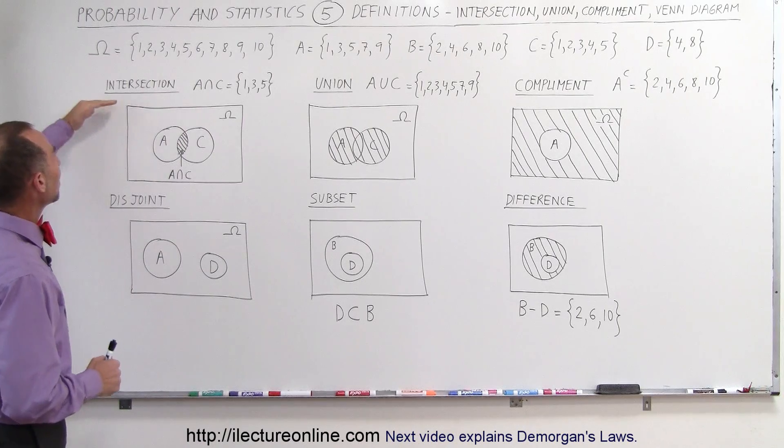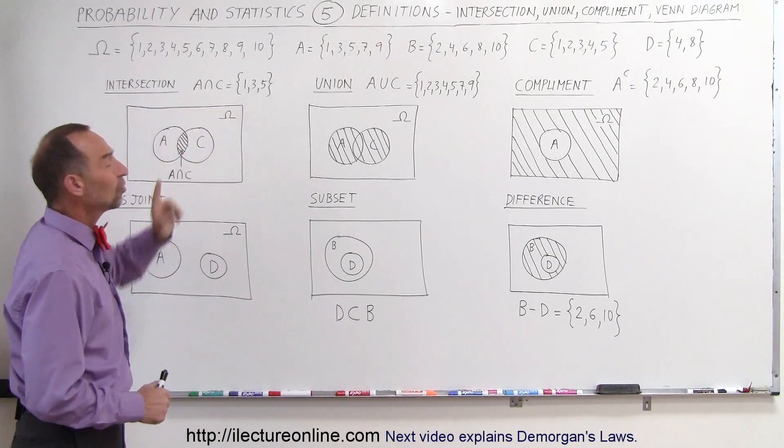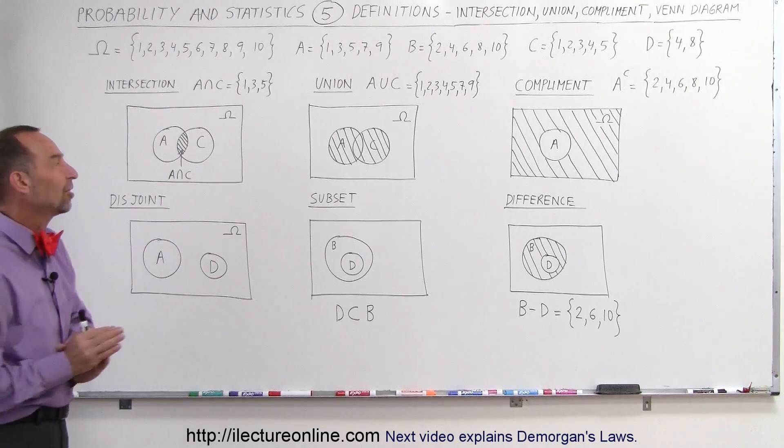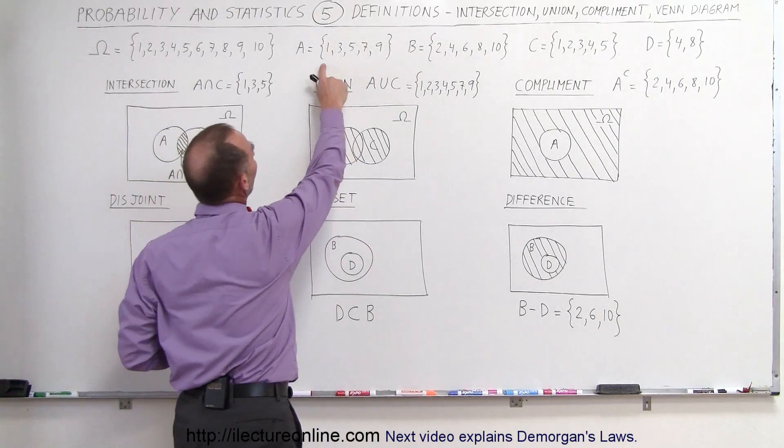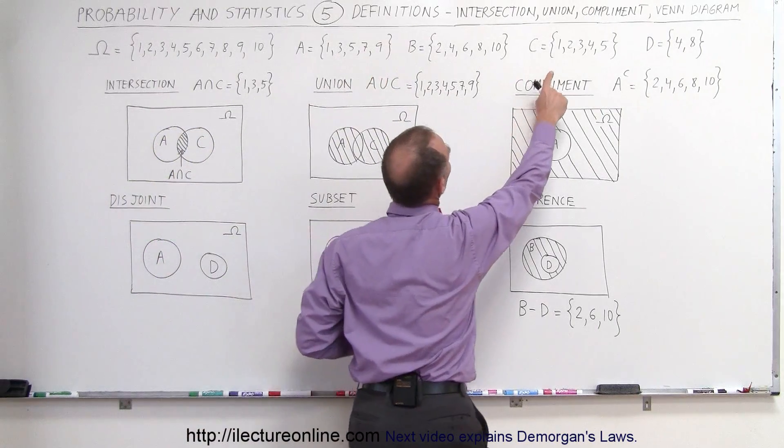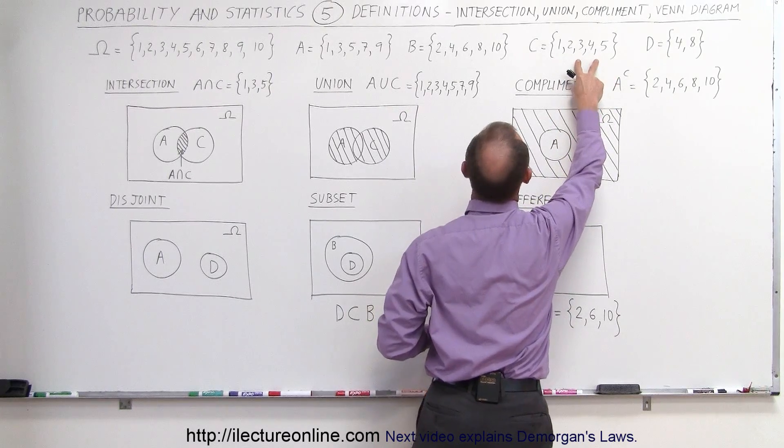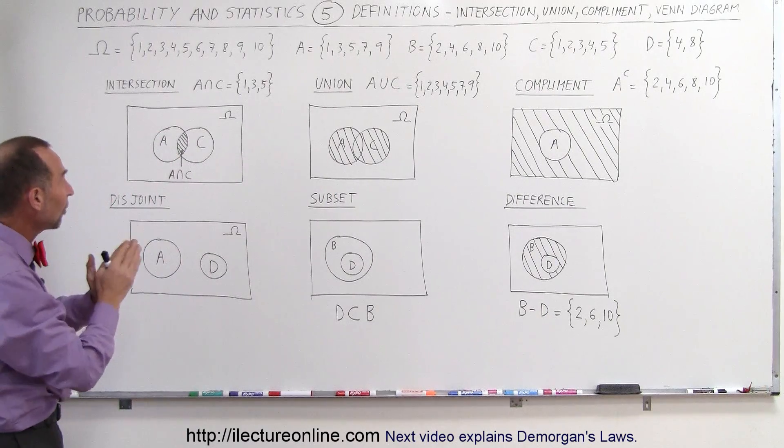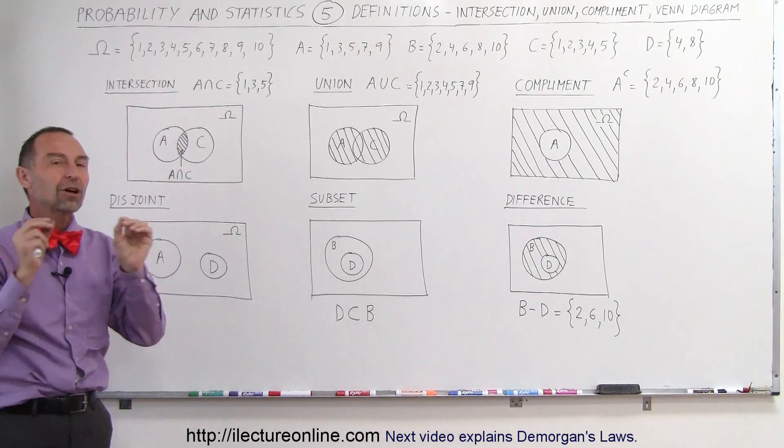Now what is the intersection between set A and set C? An intersection means only those elements that are common to both subsets. A has all the odd numbers and C has 1, 2, 3, 4, 5, so it has 1, 3, and 5 as the three odd numbers. The three numbers common to both subsets are 1, 3, and 5—the intersection.